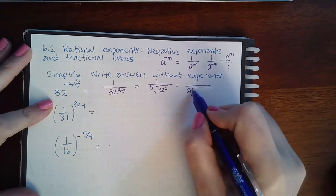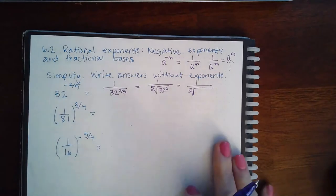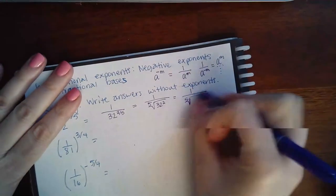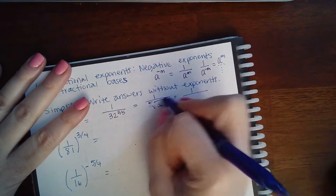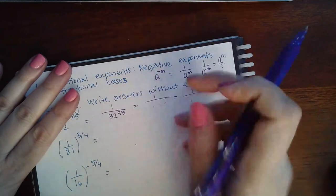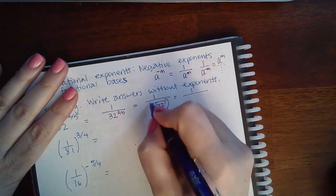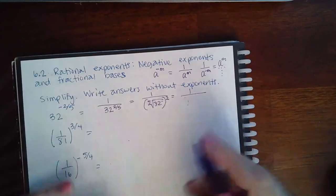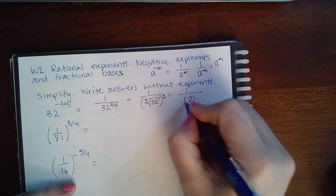Actually this one might benefit me to write it in the other form because I do know that I have a fifth root of 32. So it would be beneficial to use the fifth root of 32 and then the whole quantity squared. And the fifth root of 32 is 2, and then when I square that I get 1 over 4.